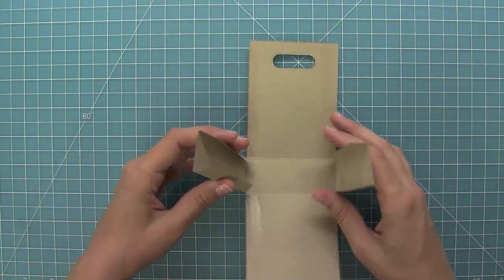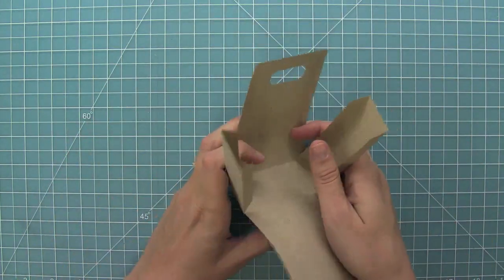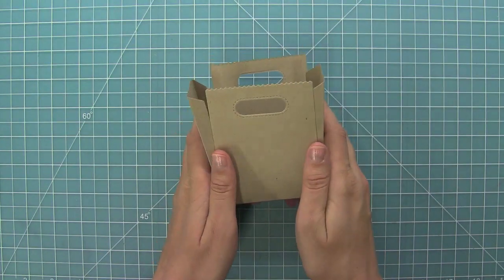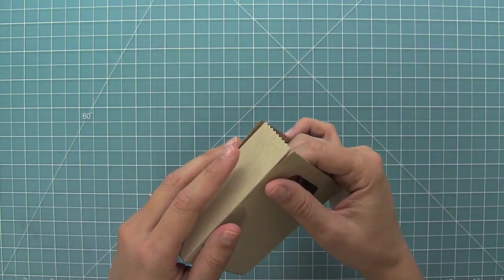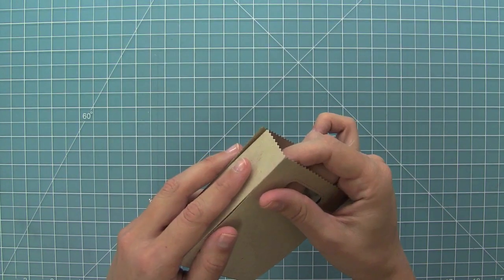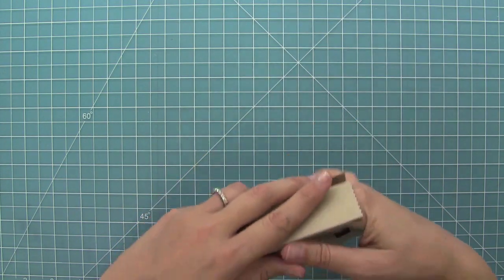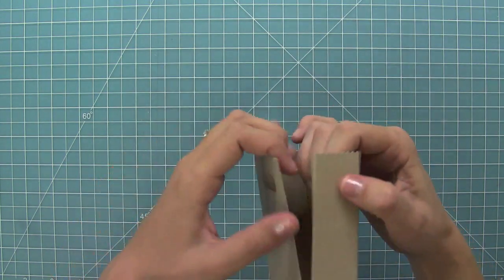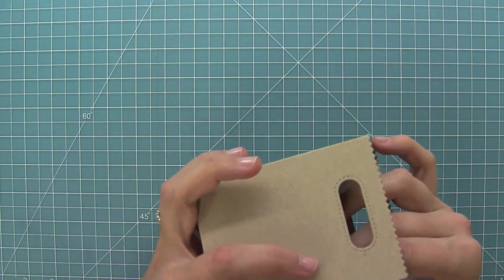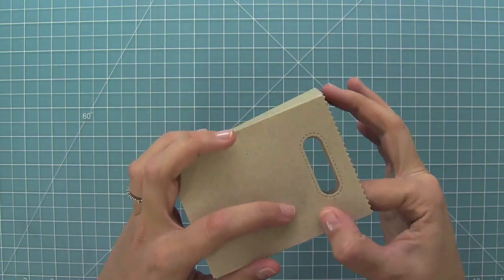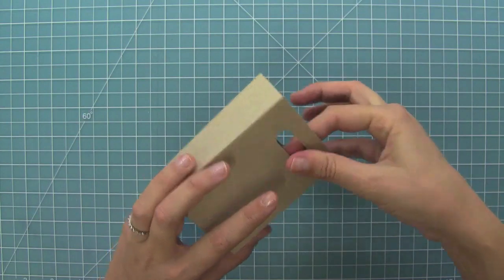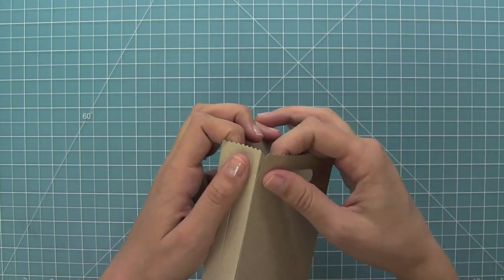As you pull the pieces up, the bag will start to form and those little side pieces that we creased earlier, those are what's going to adhere the whole bag together. You'll just line up those edges and then just press inside with your finger and then repeat the same thing. Line up the edges and then just press inside, and then you'll do the same things on the other side.